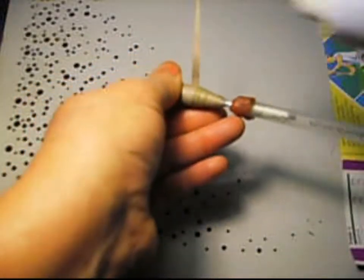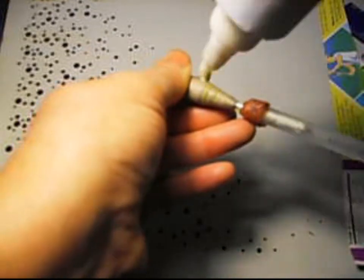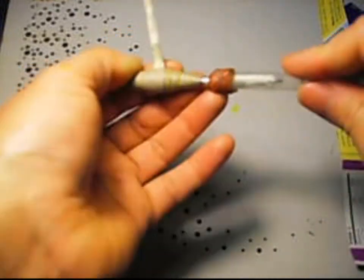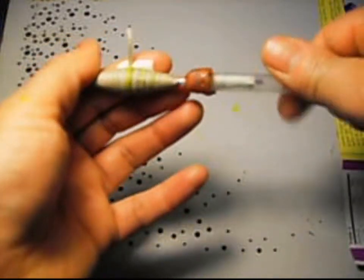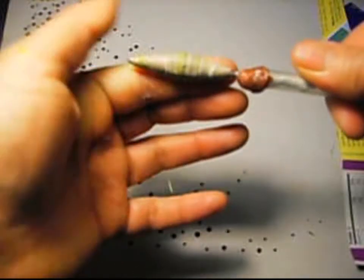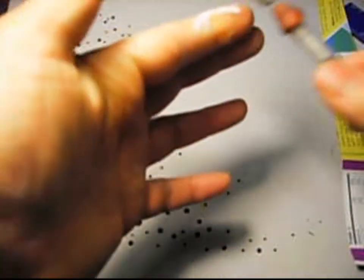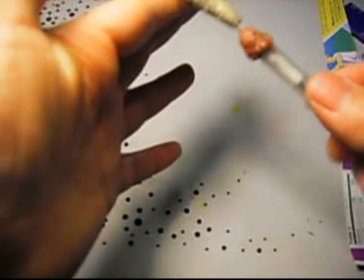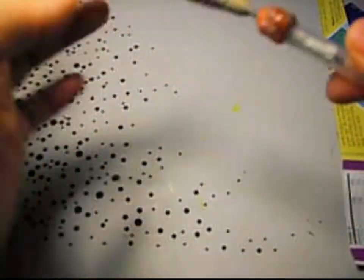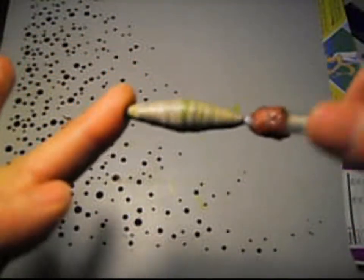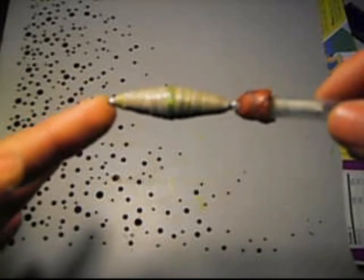And now we're going to put the bead right here. Roll it. And that's almost right in the middle, so I guess it's okay. It looks like that. I think it looks nice. I hope you guys like it.